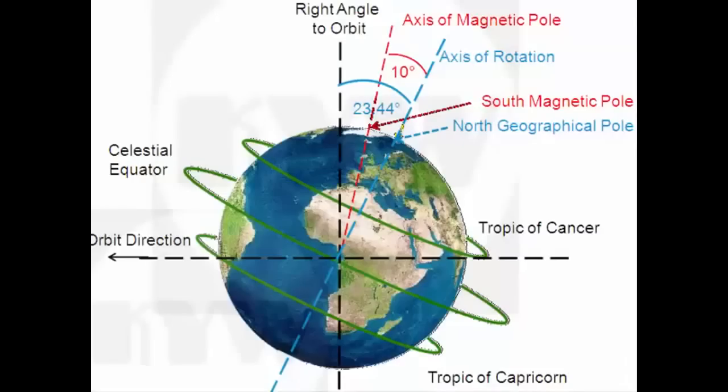Pole shift: new shocking evidence points to Earth's pole shift, a reversal of the Earth's magnetic poles taking place. Volcanoes, earthquakes, strange noises from the sea - new shocking evidence points to a pole shift which, if it happens fast, will cause chaos around the world.